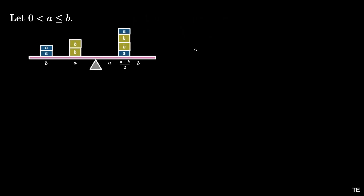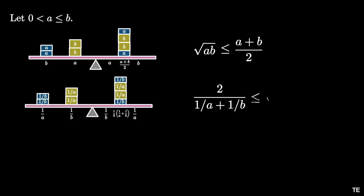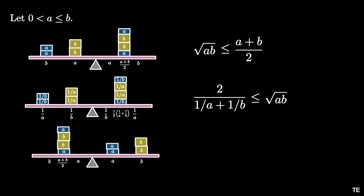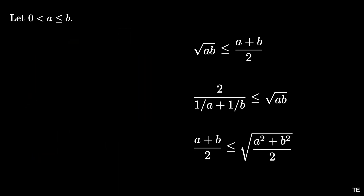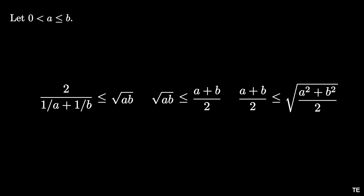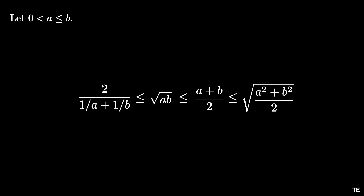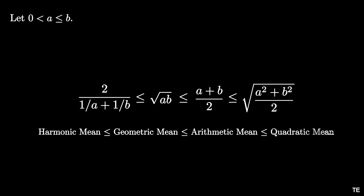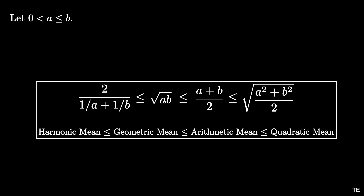The first system of weights showed us the arithmetic mean–geometric mean inequality. The second showed the harmonic mean–geometric mean inequality, and the third showed the arithmetic mean–quadratic mean inequality. Putting these three inequalities together gives one long string: the harmonic mean ≤ geometric mean ≤ arithmetic mean ≤ quadratic mean. We get equality throughout if and only if a = b, so the system never rotates but is perfectly balanced. Thus we have a physical proof worthy of Archimedes' approval of the mean inequalities.